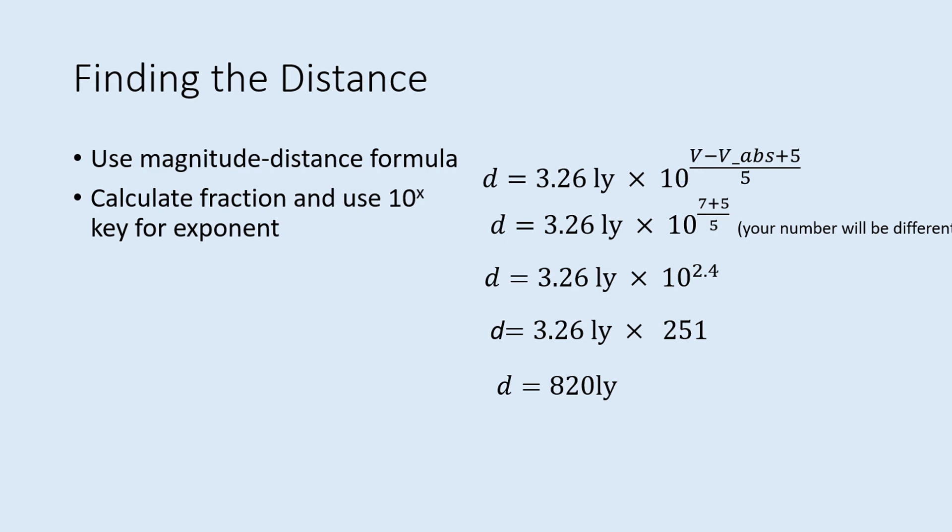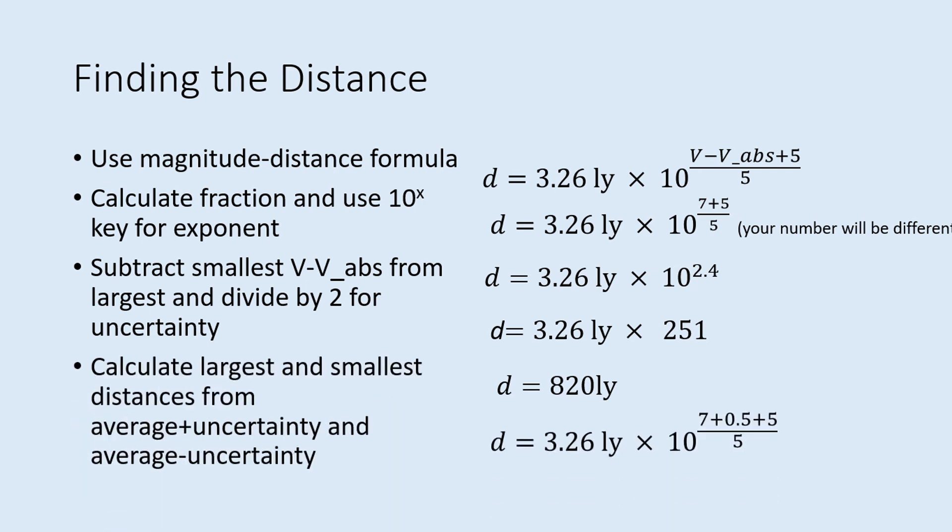In addition to finding the best estimate of the distance, the lab also asks you to estimate the range of possible distances. Subtract the smallest from the largest values of V minus V abs in table 3, and then divide the result by 2 to get the uncertainty in the distance modulus. Then calculate the distance by adding the uncertainty to the average value of the distance modulus and putting this new value into the magnitude distance formula. That gives a maximum possible distance. You can also calculate a minimum distance by subtracting the uncertainty from the average distance modulus and using that to calculate a distance. Subtract the minimum distance from the maximum and divide this result by 2 to get the uncertainty in distance. And then fill in the summary of your results.